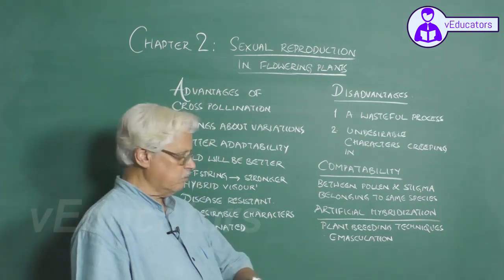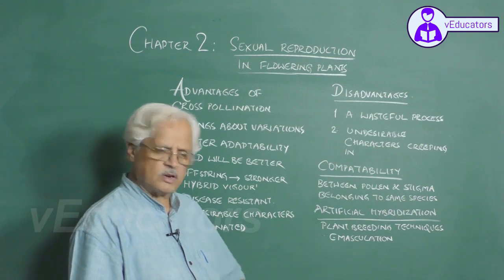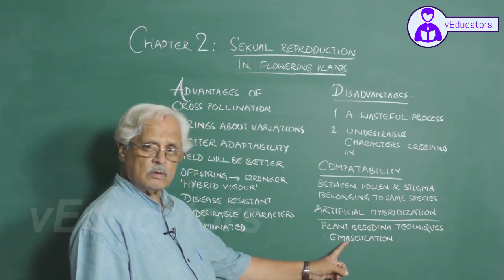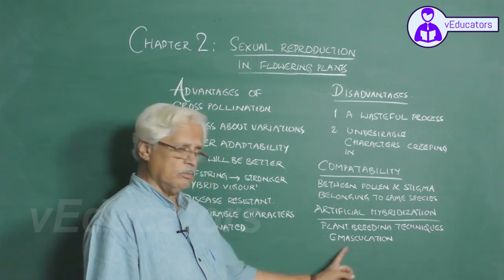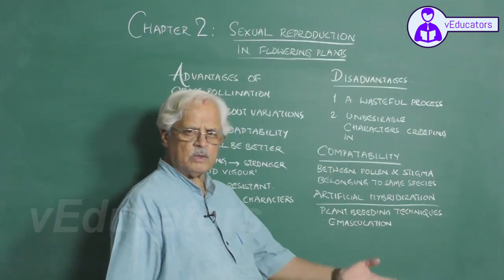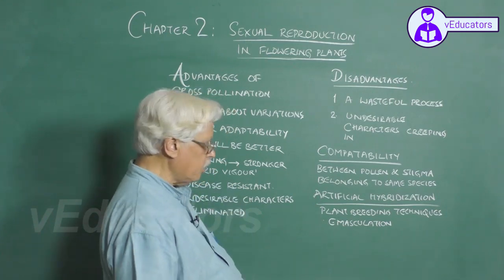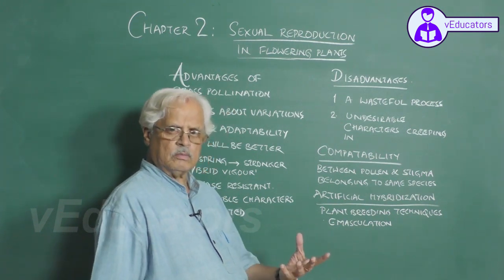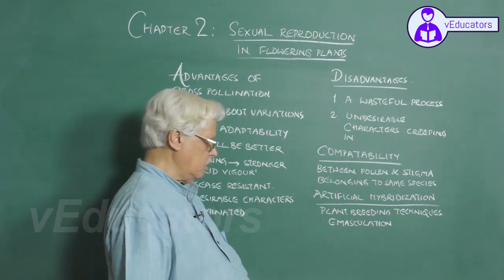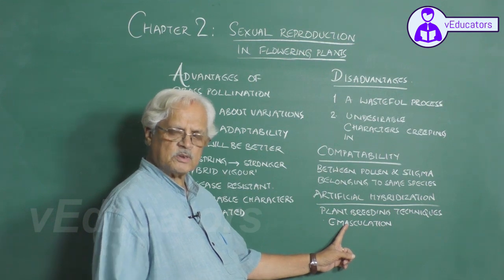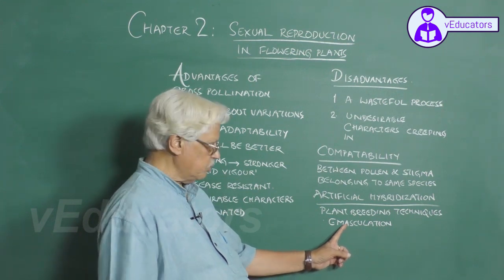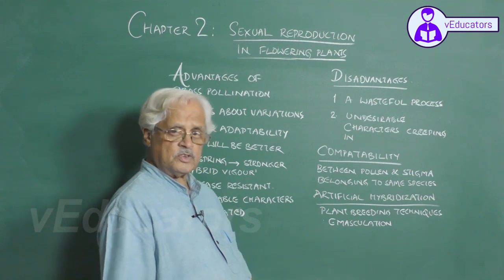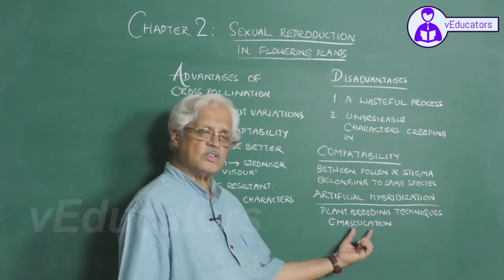Before pollen grains collected from one particular flower are artificially introduced into the stigma of another flower, the second flower's own pollen grains will have to be removed earlier. So in plant breeding techniques, when artificial pollination is being brought about, one important technique to be followed is emasculation — the removal of pollen grains from a bisexual flower prior to artificial cross-pollination.